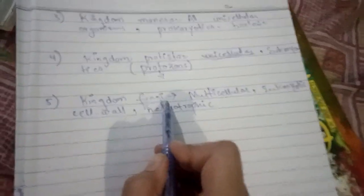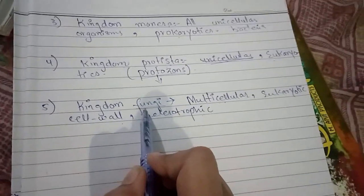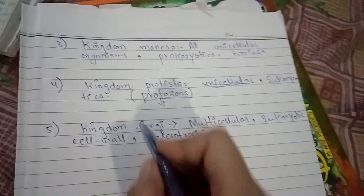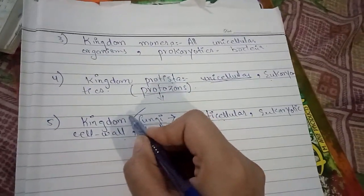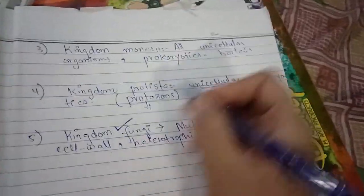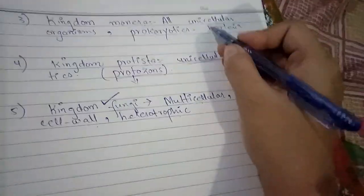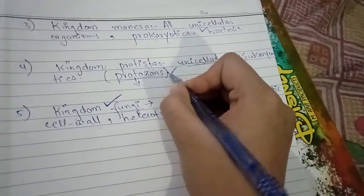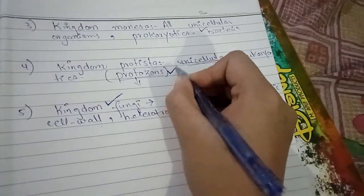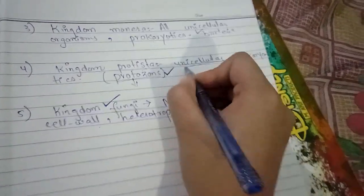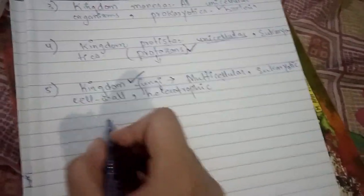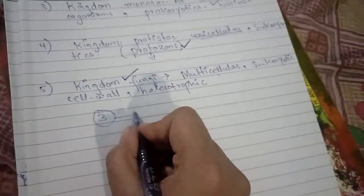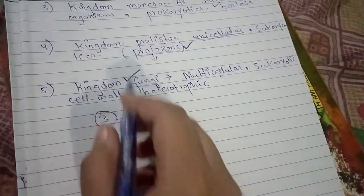The Five Kingdom System solved many problems — fungi were given their own kingdom, bacteria were separated, and protozoans and euglenoids were also resolved. Many problems from the previous classification systems were addressed.